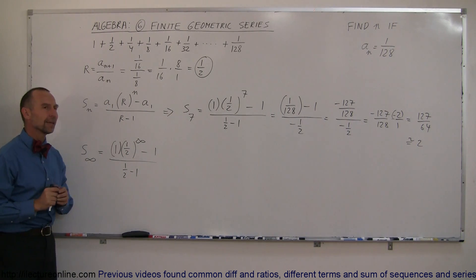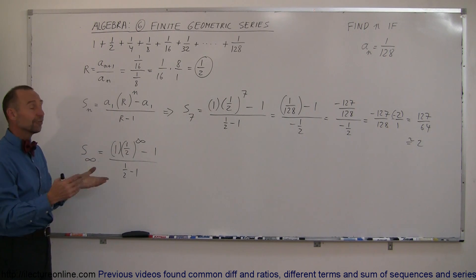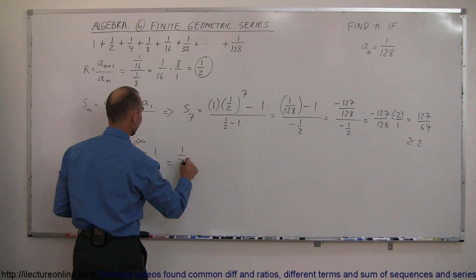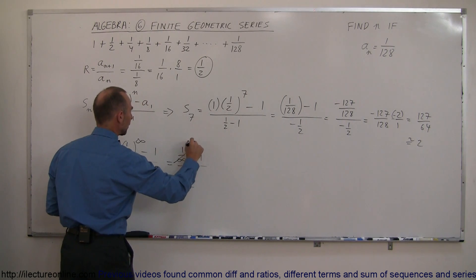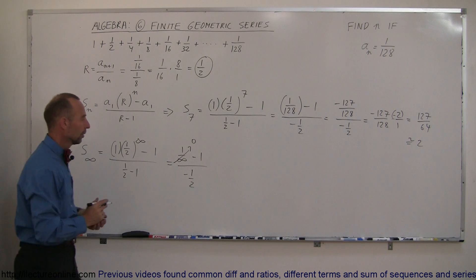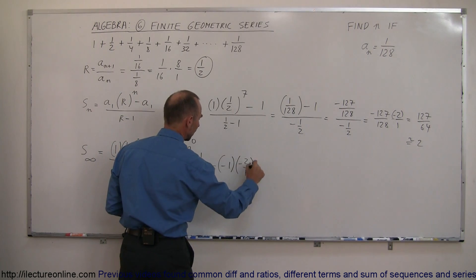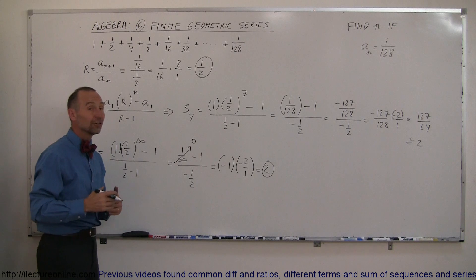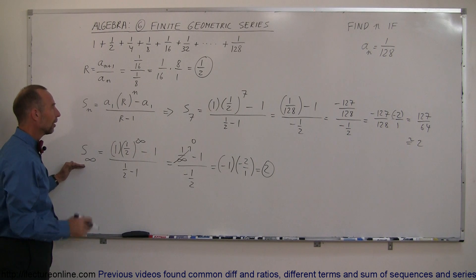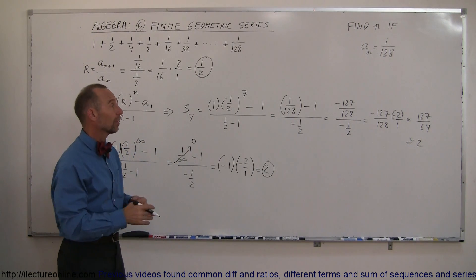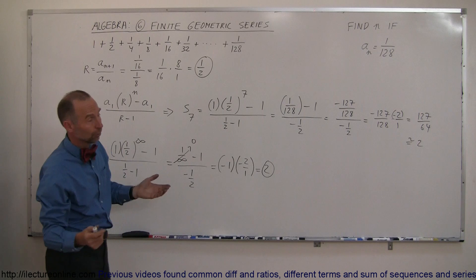What is 1/2 to the infinity? Well, 1 to the infinity is still 1, but 2 to the infinity is an infinite number, so this becomes 1 over infinity minus 1, divided by 1/2 minus 1, which is negative 1/2. Anything divided by infinity equals 0, so the numerator becomes negative 1. Multiplying by the inverse of the denominator gives negative 1 times negative 2/1, which equals positive 2.